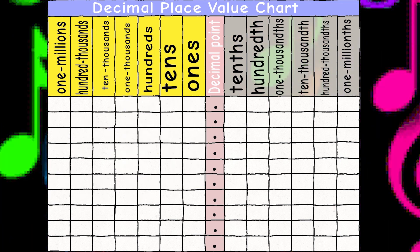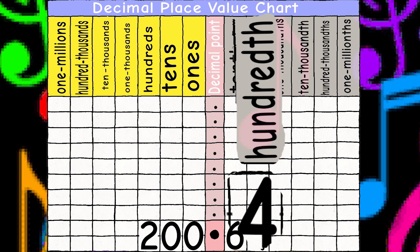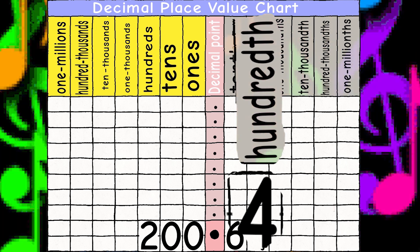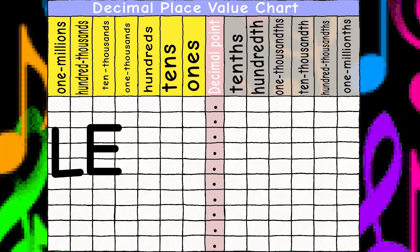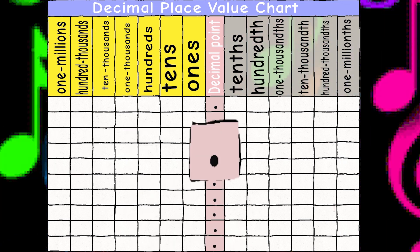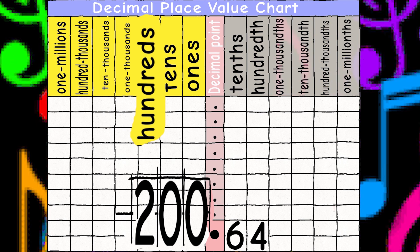Back to 200.64. Last time we found the place value of 4. Let's run it. The whole number portion is 200 'cause it's on the left side, the left side of the decimal point. Now let's find out what place is the 2.